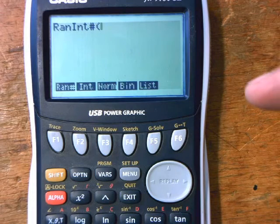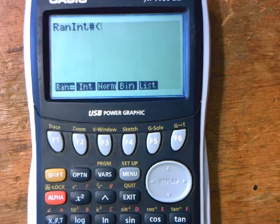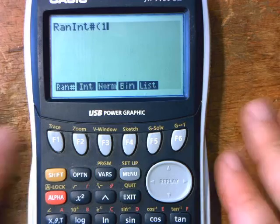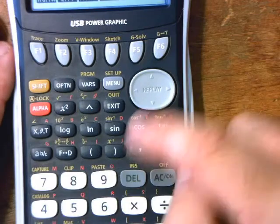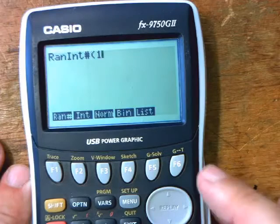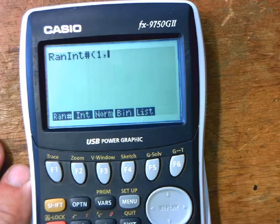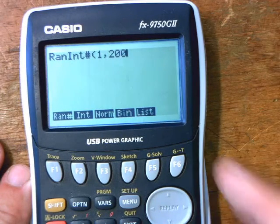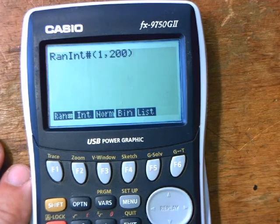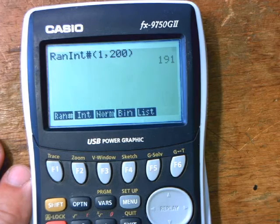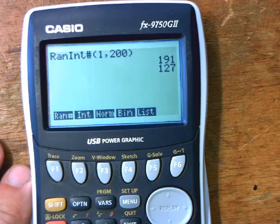Now I want a random number between 1 and 200, so I press 1 and then I press the comma button. The comma button in your calculator is there. So when I press the comma button it produces a comma, and then 200, close the brackets. And then press the blue equals button.